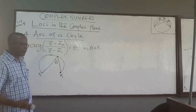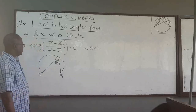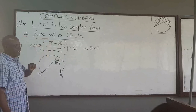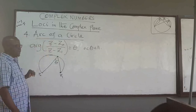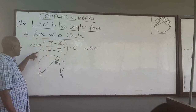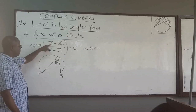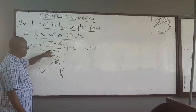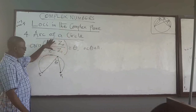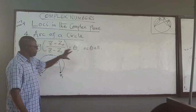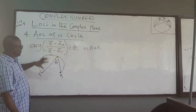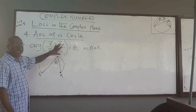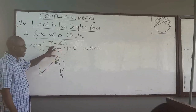Welcome to the next part of this lecture. We are looking at the fourth part, which is the half of a circle. Whenever you see that the argument of (z minus z1) over (z minus z2) is equal to theta, then theta in the range zero to pi describes the half of a circle. The question is: how do we know that this is really the half of a circle?